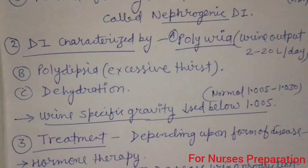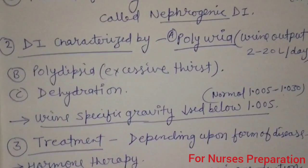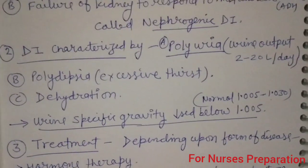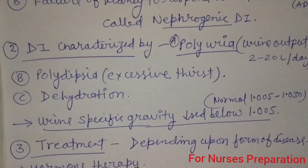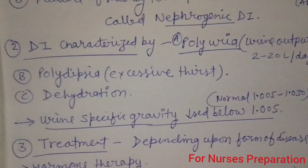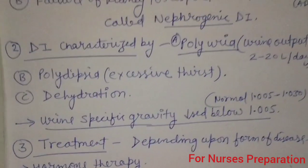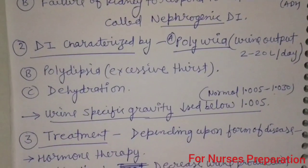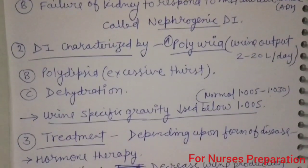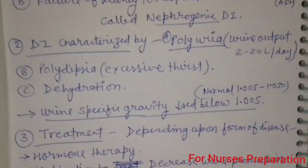From this topic, from this part — urine specific gravity — you should always remember that in a diabetes insipidus case, due to excess urine production, the urine specific gravity is decreased.